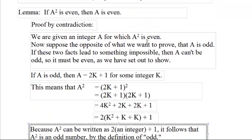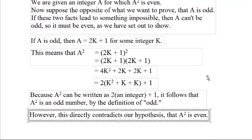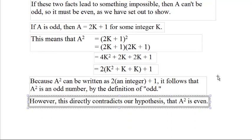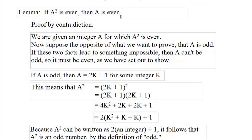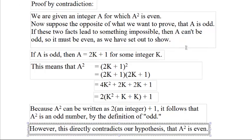But wait a second. We were supposing that a squared was an even number. That directly contradicts our hypothesis. So we have a problem. If we suppose that a squared is even and a is odd, we have a problem.